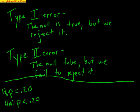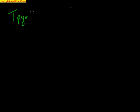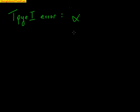Let's quickly talk about the probability of these types of errors. The probability of a Type I error is equal to alpha, which is our significance level. So if we choose a significance level of 5%, there's a 5% chance we make a Type I error. If we lower alpha to be more strict at 1%, then our Type I error only has a 1% chance of occurring.